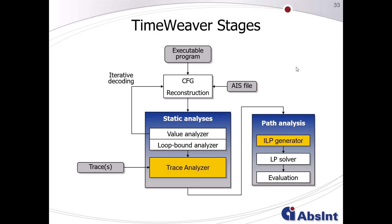To understand the differences between the hybrid approach with Timeweaver and the pure static approach with AIT, here is the Timeweaver stage overview. It looks very similar to AIT and we share the very same first phase of decoding and reconstructing the call and control flow graph. Timeweaver also has value analysis and a loop bound analysis that statically determines worst-case upper loop bounds. Later, if we also extract loop bound information from traces, we compare it to what we analytically determined and may scale the timing contribution of one loop iteration up to the worst-case loop bound — what we call loop scaling.